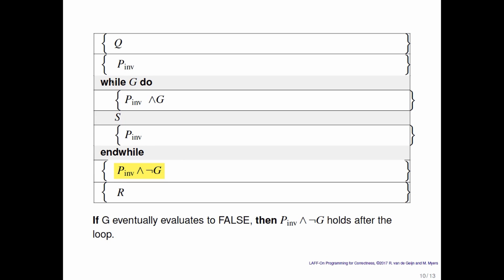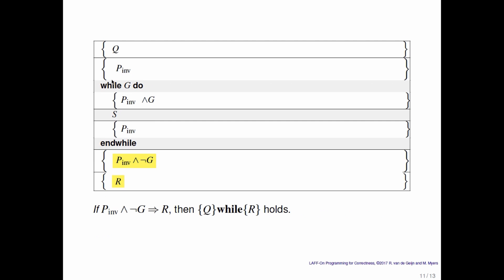Eventually, hopefully, the loop guard becomes false, at which point we come out of the loop. But notice that we knew that at the bottom of the loop after statement s the loop invariant was true. And therefore, we can conclude that the loop invariant is true after the loop. But now also the loop guard is false. If we can then show that the fact that the loop invariant holds and the loop guard is false implies r, then we know that this code segment is correct.